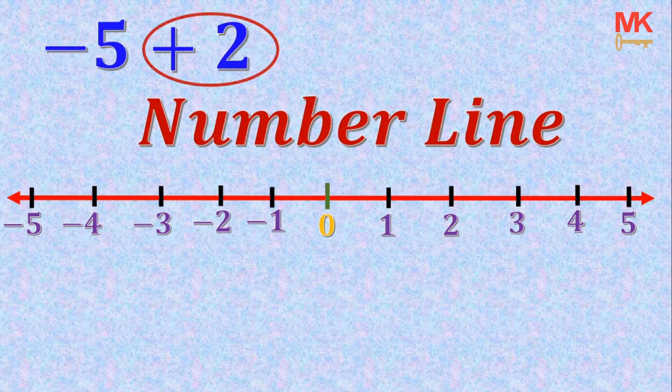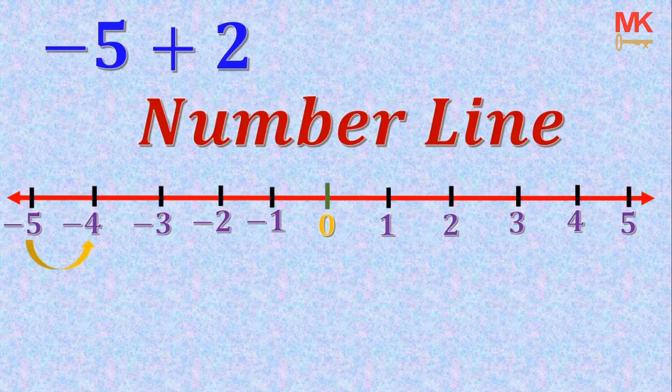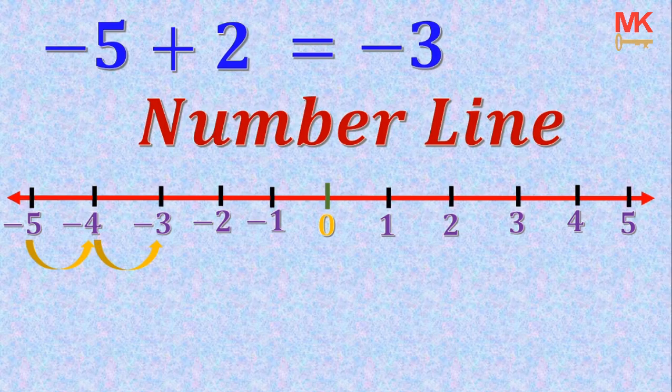So let's see how it goes now. 1, 2. So you can see that negative 5 plus 2 is just negative 3.